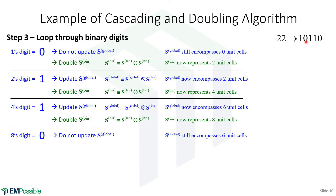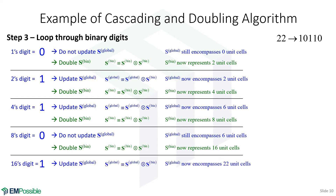The fourth digit is a zero, so we do not update the global scattering matrix — it still encompasses six unit cells. We double the binary scattering matrix, which now represents 16 unit cells. The fifth and final digit is a one, so we update the global scattering matrix. Before this, the global had six unit cells and the binary had 16. Combining them gives 22 unit cells. We double the binary scattering matrix one last time to 32, the loop ends, and the global scattering matrix represents 22 unit cells.